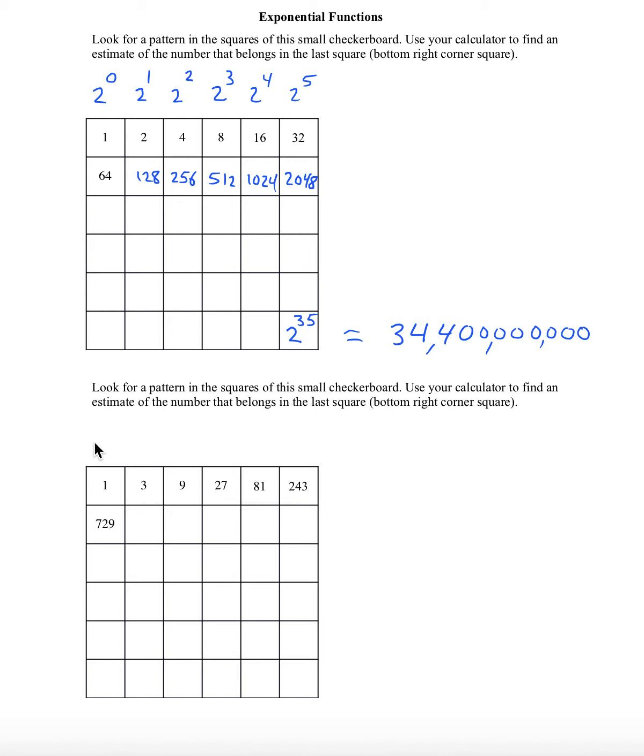You may have guessed that the base here is 3. So we have 3 to the 0, 3 to the 1, 3 to the 2, 3 to the 3, and so on.